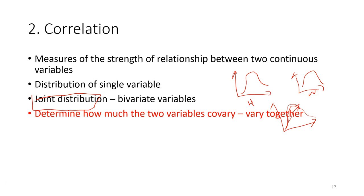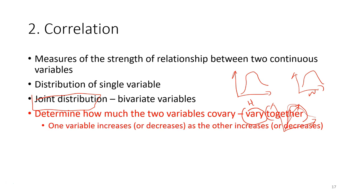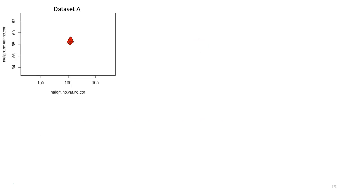The correlation determines how much two variables co-vary together. There are two key ideas: whether one variable increases or decreases as the other variable increases or decreases. Consider six datasets that have the same body height and body weight means, but with different variation. Without performing any analysis, just from the distribution of data — how much the data varies and whether they vary together — you can already get some intuition.